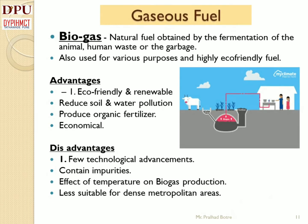Biogas production is growing steadily as more people are setting up biogas plants. Biogas is a natural fuel obtained by fermentation of animal waste, human waste, or garbage. Advantages of biogas: First, biogas is eco-friendly and renewable. The raw materials used in the production of biogas — such as manure, food scraps, and crop residue — are renewable and will always be available, making it highly sustainable.